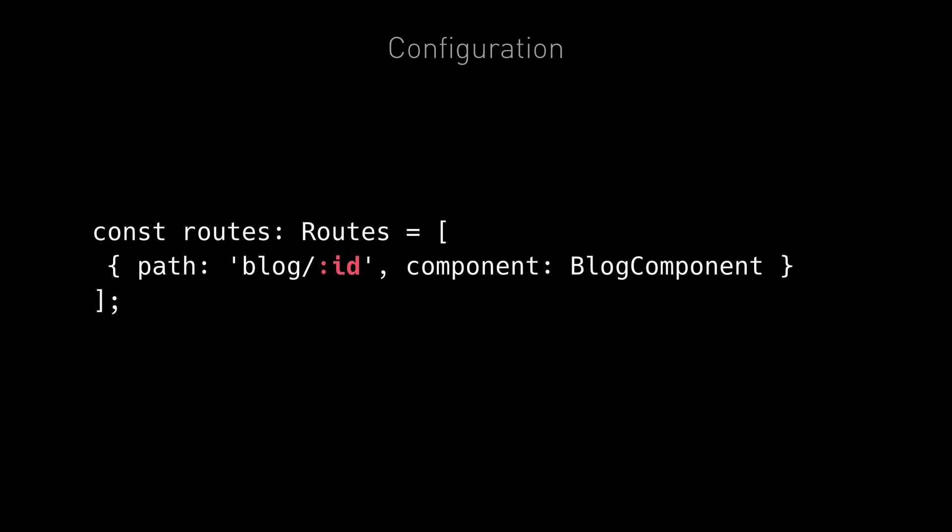A path can have any number of variables as long as they all start with a colon and they all have different names. Another important thing to know about parameterized routes is that non-parameterized routes always take priority over parameterized routes.